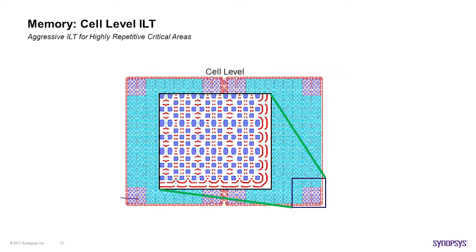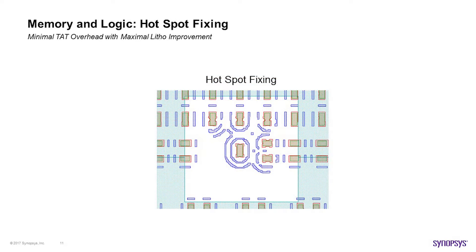A little farther toward production, we have what we call cell-level ILT. This is an example where we use repetition finding on a repeated array to find small pieces that are repeated and very critical to the customer, then run very aggressive ILT on them. Because we've found a lot of symmetry and repetition, we know the solution will come quickly, will be symmetric, and we can run it a bit longer on a per-area basis to get an aggressive solution. This really squeezes out a lot of depth of focus or process window performance on a repeated area.